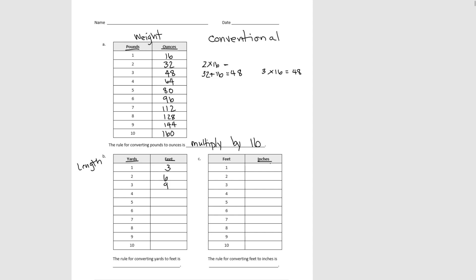Also knowing that there are 3 feet in a yard, we could say if there are 9 feet in 3 yards, then 3 more feet gives us 4 yards, and we can continue that way. Pause the video and finish the table for yards and feet.